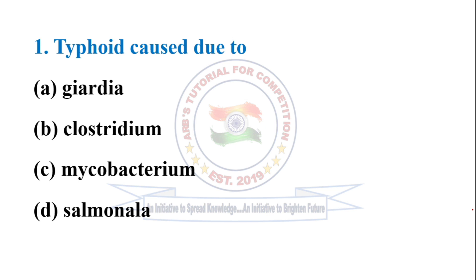Typhoid caused due to? The correct option is option D: Salmonella. It is a bacteria. The name of the bacteria is Salmonella typhi.